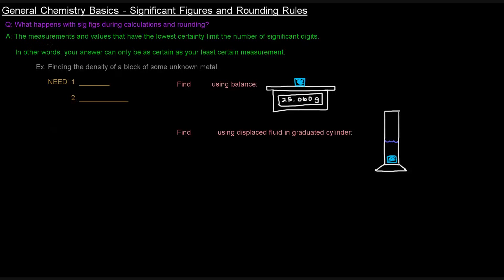The measurements and the values that have the lowest certainty limit the number of significant digits. Basically, your answer can only be as certain as your least certain measurement.